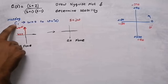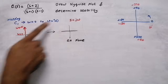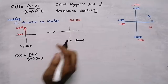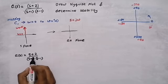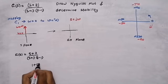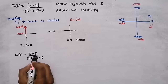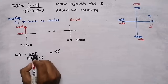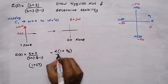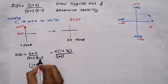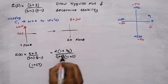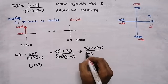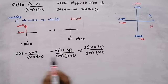Now mapping region C1 where omega varies from 0 to positive infinity. First check whether the transfer function G(S) is in standard 1 plus ST form. Here we have 2 plus S in the denominator, so take 2 outside to get 1 plus S by 2. The standard form becomes 0.5 S divided by (1 plus S)(minus 1 plus S). Now G(S) is in standard form.